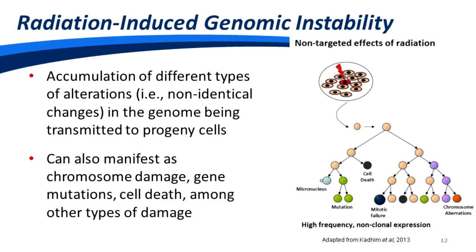The other non-targeted effect we are focusing on today is radiation-induced genomic instability, which refers to the accumulation of different types of alterations in the genome being transmitted to progeny or daughter cells. A directly irradiated cell, after cell division, can produce daughter cells displaying different forms of damage: a cell with a micronucleus containing genetic material in the cytoplasm, cells with mutations, cells that have died, a cell that failed to go through mitosis, and cells with changes in chromosome structure or number.